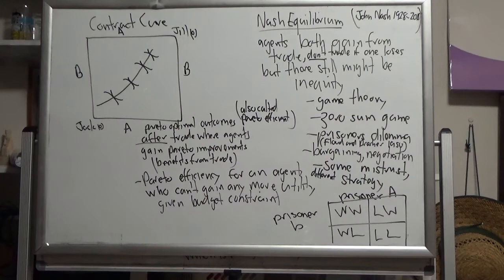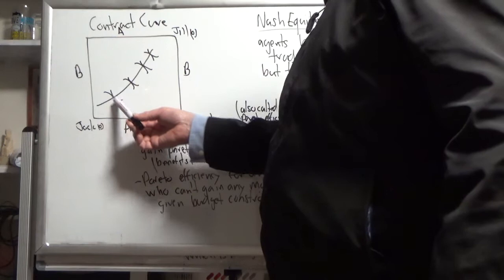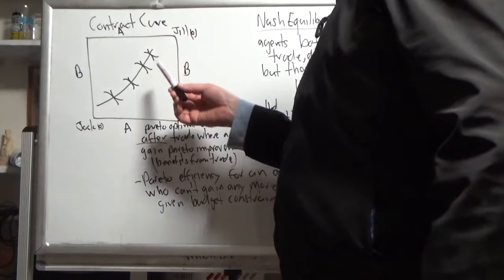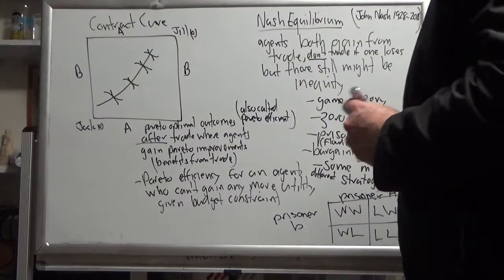In the textbooks, if you see this term contract curve, it's the locus of all the Pareto optimal points between Jack and Jill. It's called a contract curve, all those points are Pareto optimal because there's a tangency of the two indifference curves.